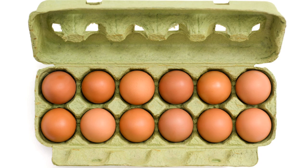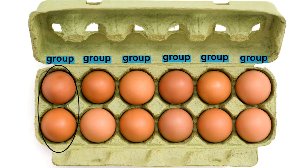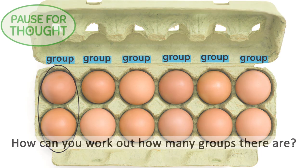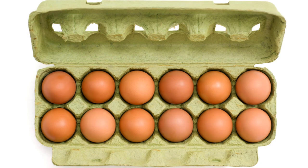Here is a carton of 12 eggs. There are two eggs in each group. How can you work out how many groups there are? There are equal groups, so you can divide to find out how many groups there are.